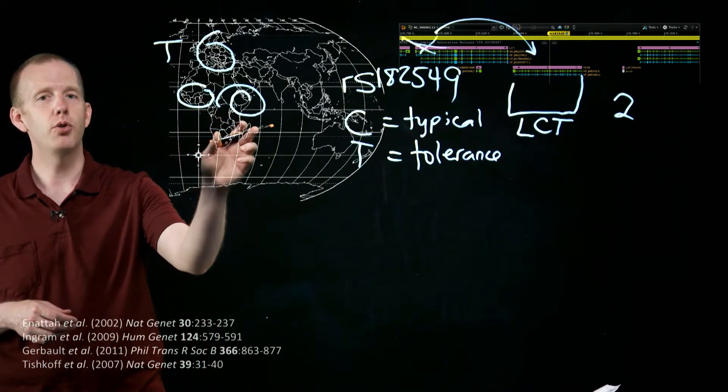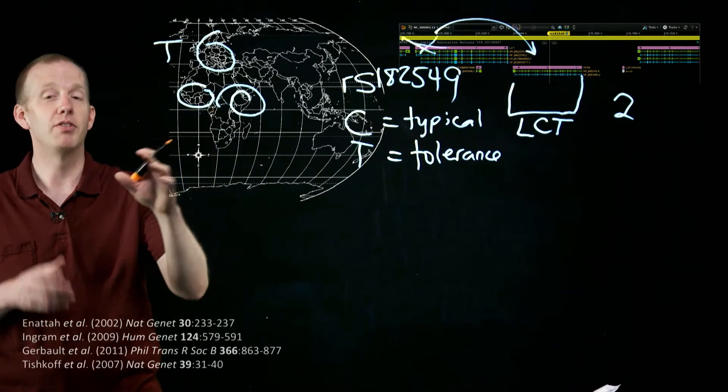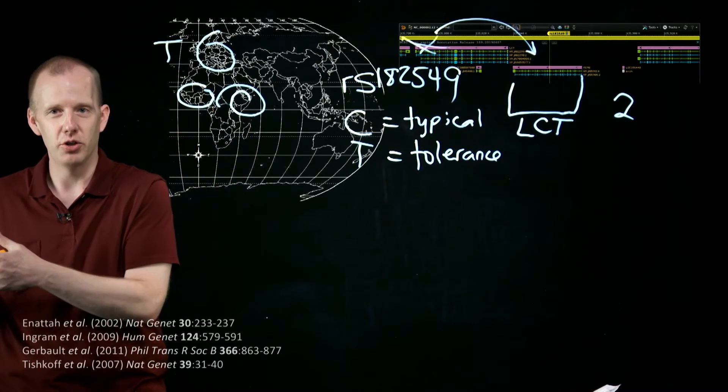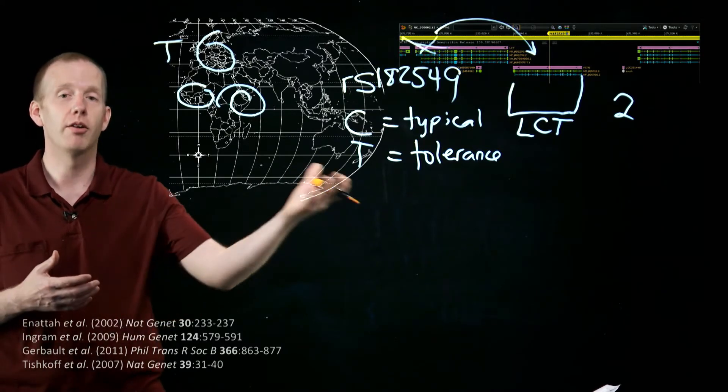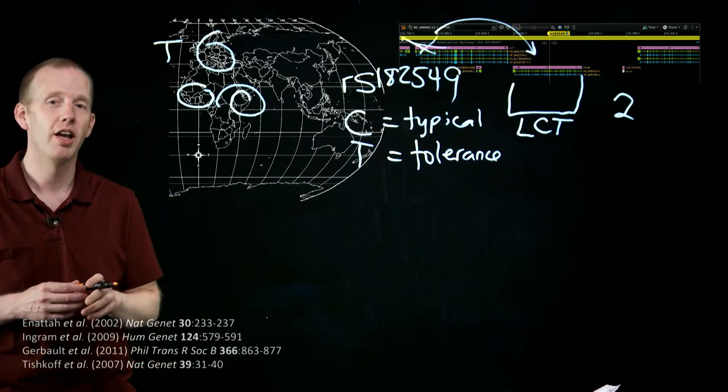So presumably, these other two populations of humans have different mutations somewhere else in their genomes that still let them have the same trait, the trait of lactase production in adulthood.